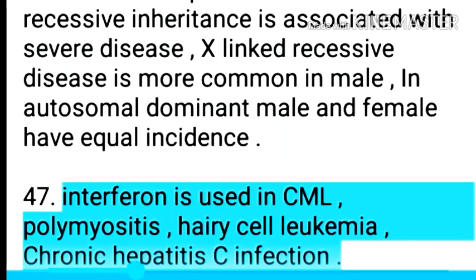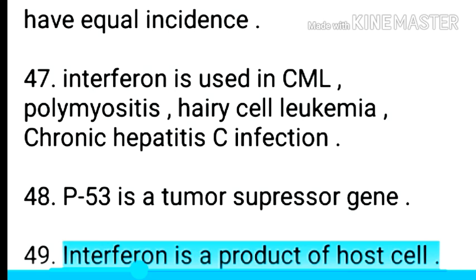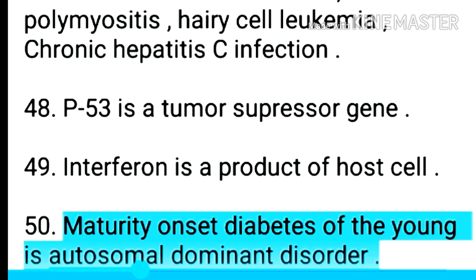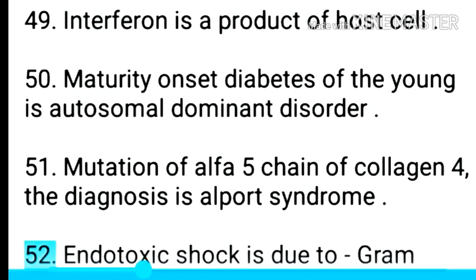Point 48: Interferon is used in CML, polymyositis, hairy cell leukemia, and chronic hepatitis C infection. Point 49: P53 is a tumor suppressor gene. Point 50: Interferon is a product of the host cell. Point 51: Maturity onset diabetes of the young is an autosomal dominant disorder. Point 52: Mutation of alpha-5 chain of collagen 4 — the diagnosis is Alport syndrome.